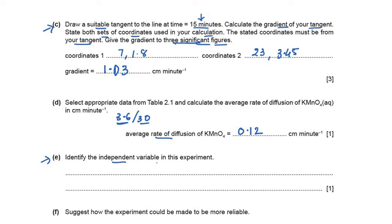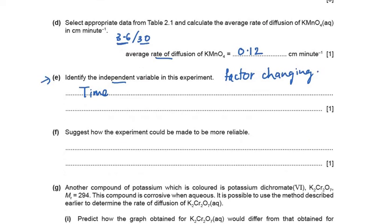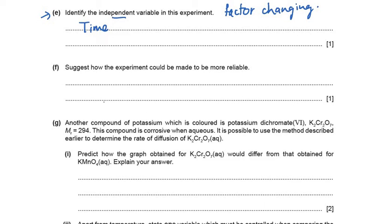Next, identify the independent variable in this experiment. The independent variable is the factor we are changing, which is time — we are measuring the diameter at various times. Note that we do not need to write the unit here, so the independent variable is simply time. As for how the experiment could be made more reliable, the answer is to repeat the experiment and take multiple readings to confirm reliability.